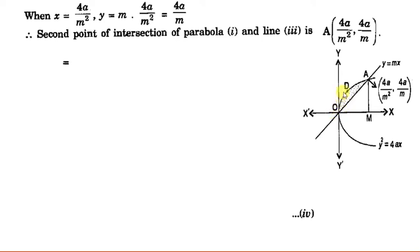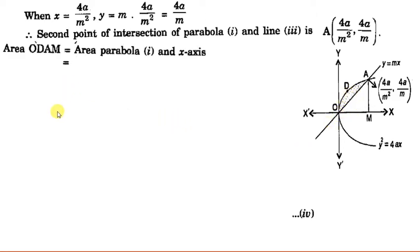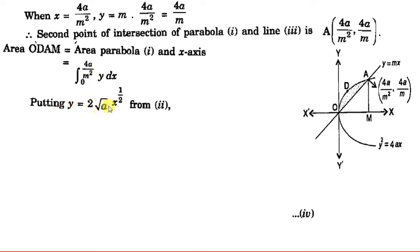To find the shaded area, we first find the area under the parabola and the X axis, between O and A. Then we find the area of triangle OMA — the area covered under the line and the X axis. Subtracting these two areas gives the shaded area. So first we find the area under the parabola: the integral from 0 to 4a/M² of Y dx, where Y stands for the parabola. From the equation of the parabola, Y is equal to 2√(ax) = 2√a · x^(1/2).